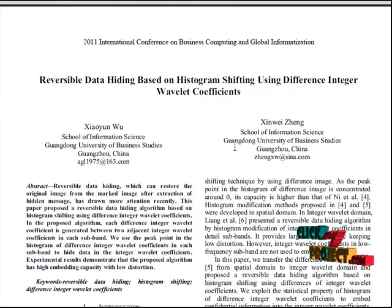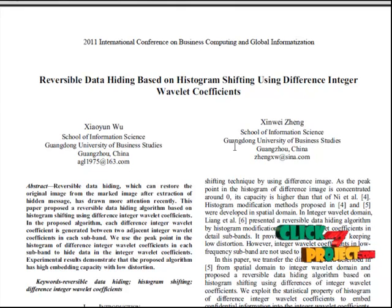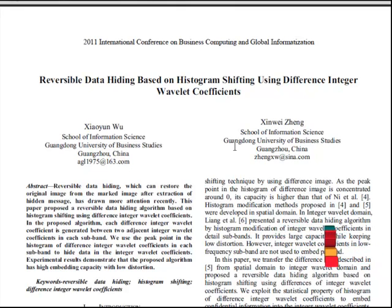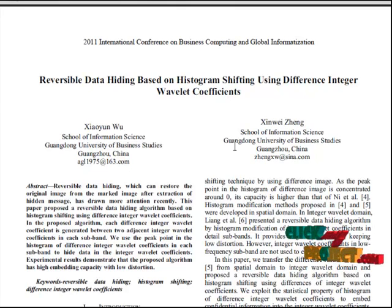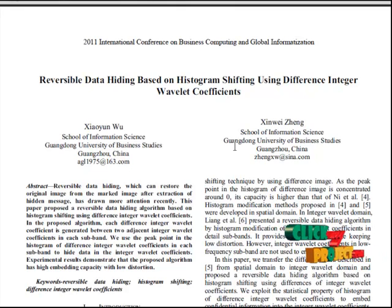In the proposed algorithm, for each difference of integer wavelet coefficients in each subband, we use the peak point in the histogram of difference integer wavelet coefficients in each subband to hide data into the integer wavelet coefficients.